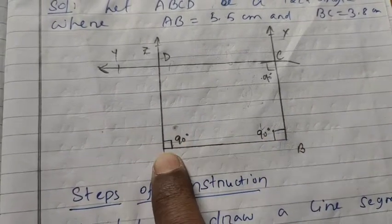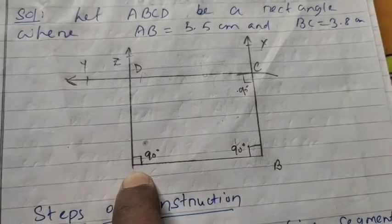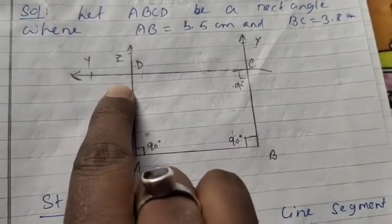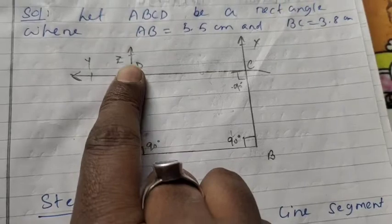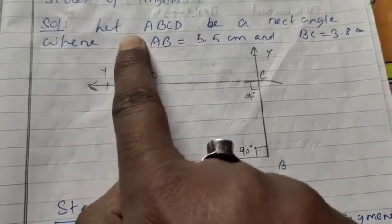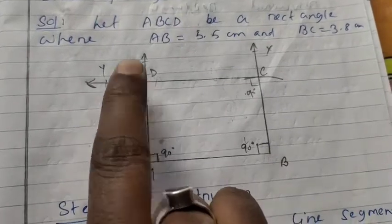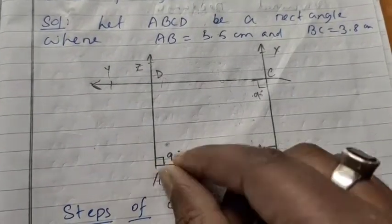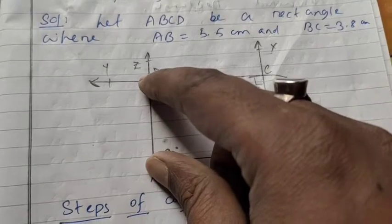Similarly, at point A, draw a ray AZ making an angle of 90 degrees with line segment AB at point A. These two rays will intersect at a point, and that point must be D, since we labeled the rectangle ABCD.